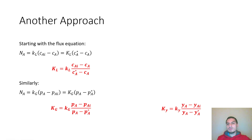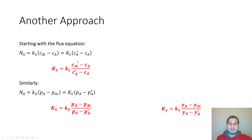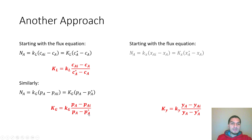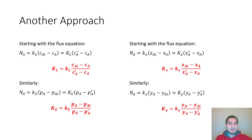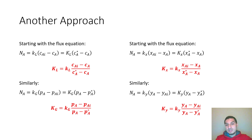This is much easier than the full derivation procedure. You just write the flux equation, and you already know c_a, k_L, and p* from the beginning — you only need to find the two interfacial values and you're done. The same approach applies for mole fraction units, giving the relations between K_x and k_x overall and individual, and K_y and k_y overall and individual.